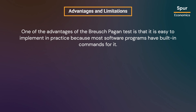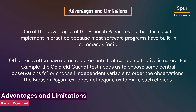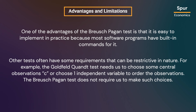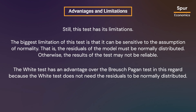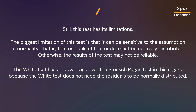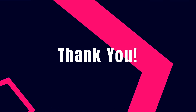One of the advantages of the Breusch-Pagan test is that it is easy to implement in practice because most software programs have built-in commands for it. Other tests can have restrictive requirements — for example, the Goldfeld-Quandt test requires choosing some central observations or selecting one independent variable to order observations. The Breusch-Pagan test does not require such choices. However, its biggest limitation is that it is sensitive to the assumption of normality: the residuals must be normally distributed, otherwise the results may not be reliable. The White test has an advantage here because it does not require normally distributed residuals.